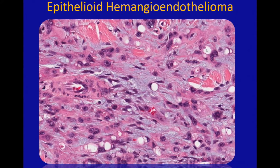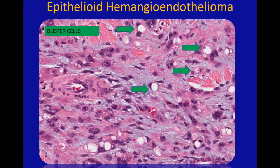That's because the tumor cells are attempting to recapitulate vascular lumen formation — these are abortive lumens forming within the cytoplasm of the tumor cell. It's a similar concept to what you might see in lobular breast cancer, which has those abortive little glandular structures that can have secretion inside them. So those are the classic blister cells of epithelioid hemangioendothelioma.